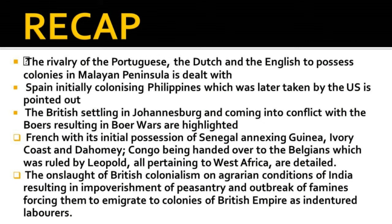In recap: the rivalry of the Portuguese, the Dutch and the English to possess colonies in the Malayan Peninsula was discussed; Spain's initial colonization of the Philippines, later taken by the US, was pointed out; the British settling in Johannesburg and coming into conflict with the Boers — resulting in the Boer Wars — was highlighted; French West Africa's expansion from Senegal to Guinea, Ivory Coast and Dahomey, and Congo being handed over to Belgium under Leopold, were detailed; and the onslaught of British colonialism on agrarian conditions in India, resulting in impoverishment of peasantry, outbreak of famines, and forced emigration as indentured labourers, was covered. Dear students, go through the lesson and complete the book-back exercises. Take care. Bye-bye.